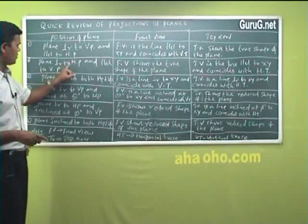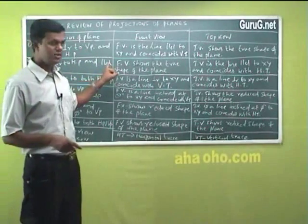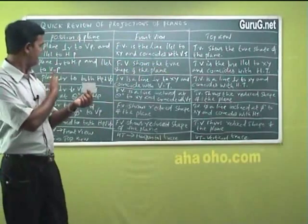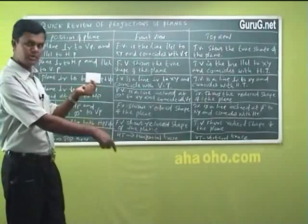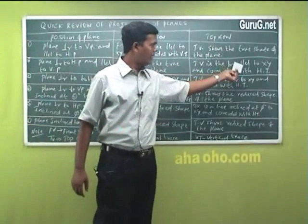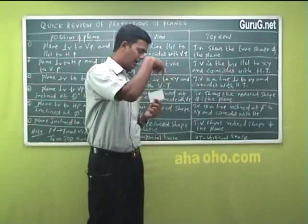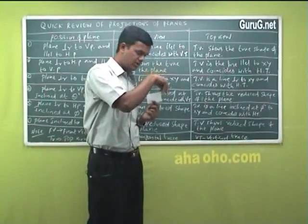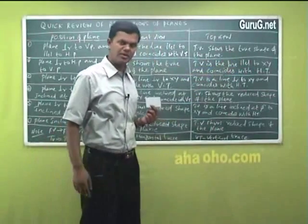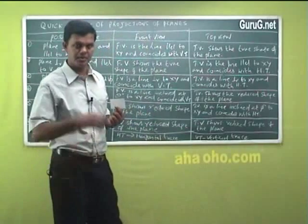Condition two: plane perpendicular to HP and parallel to VP. Here, the front view shows the true shape of the plane. Holding it parallel to VP like this — it is also perpendicular to HP — the front view shows all four points and the true shape. The top view is a line parallel to XY and coincides with the horizontal trace.